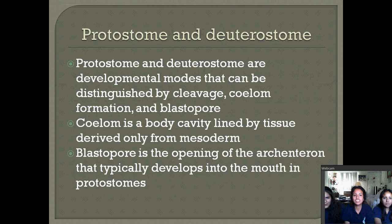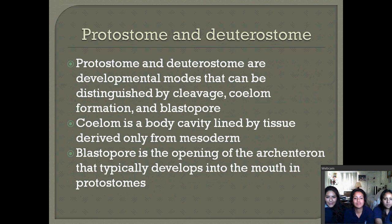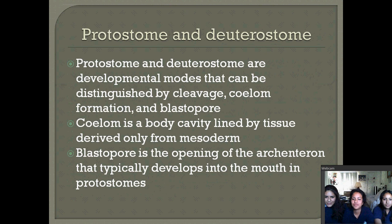Next is protostomes and deuterostomes. They are developmental modes that can be distinguished by cleavage, coelom formation, and blastopore. The coelom is a body cavity lined by tissue derived only from mesoderm. The blastopore is the opening of the archenteron that typically develops into the mouth in protostomes.